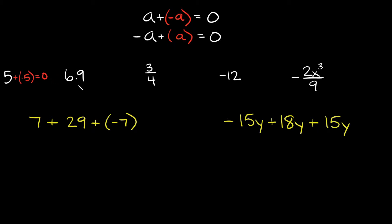Same thing here — we have positive 6.9. So the opposite would be negative 6.9, right? So if we add negative 6.9, your answer would again be 0.